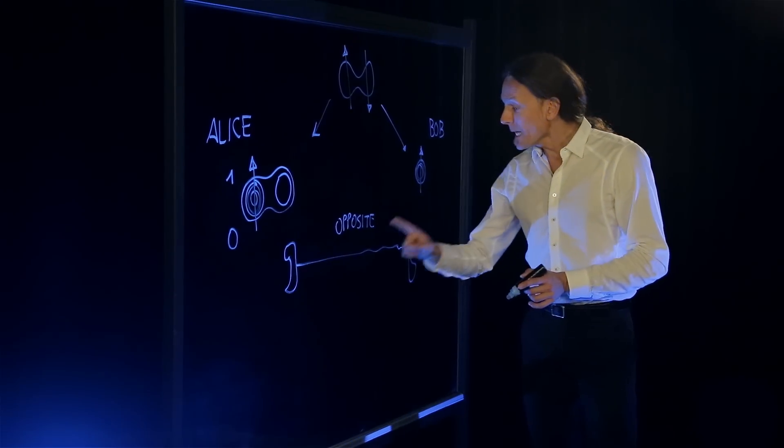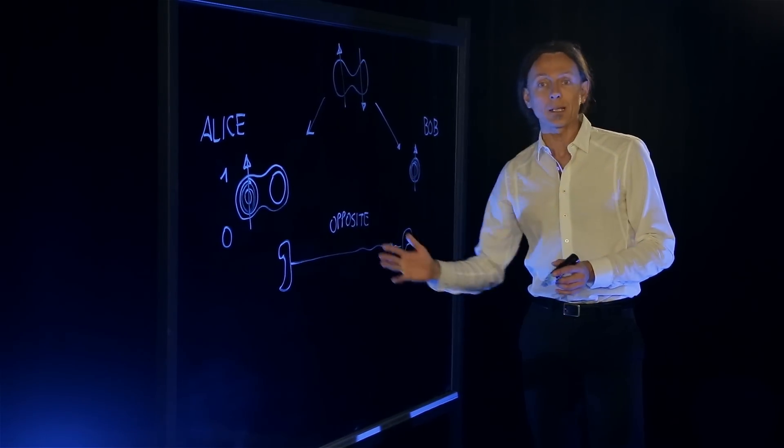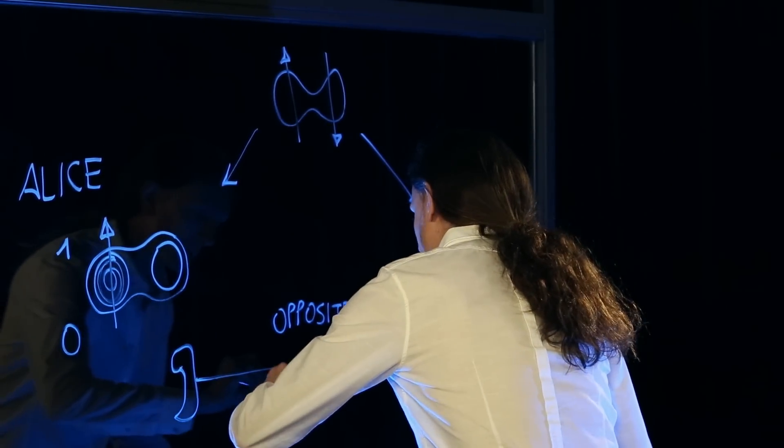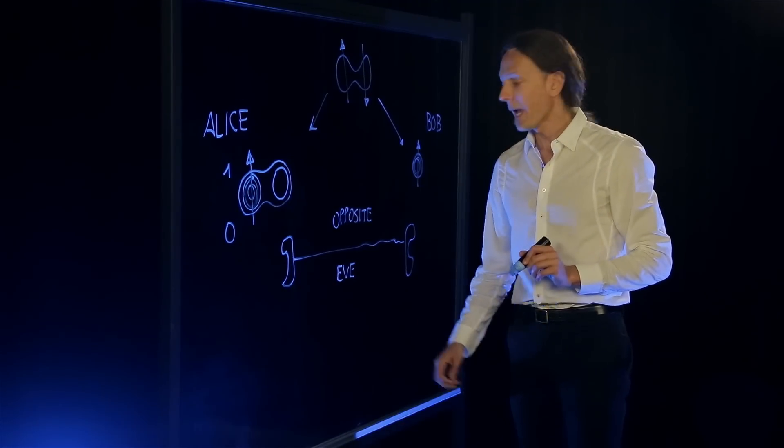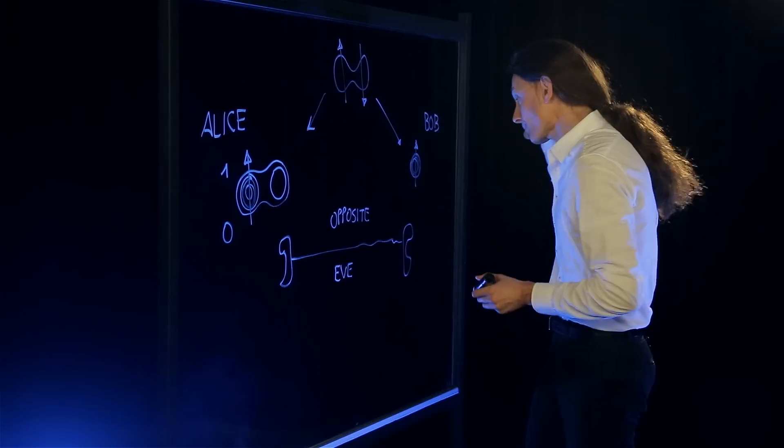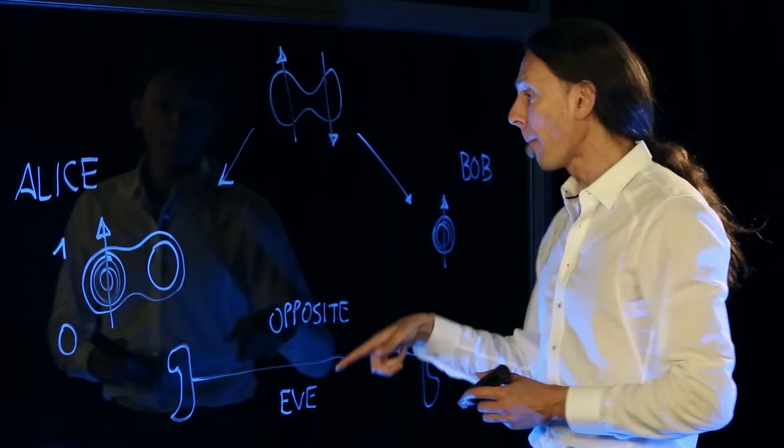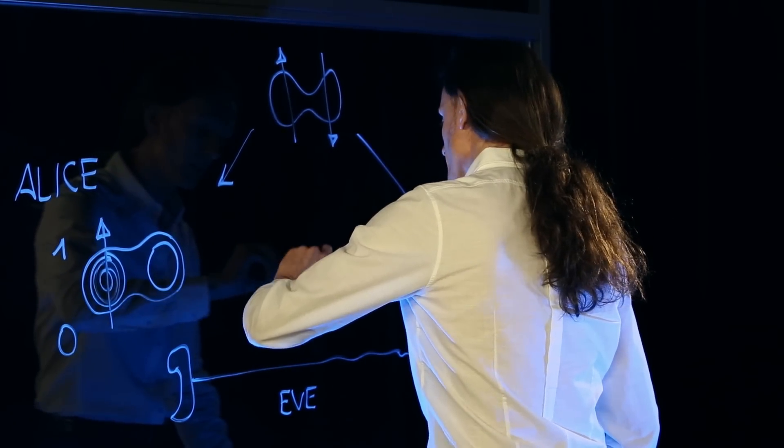Now, is it dangerous to transmit this information along this classical communication channel? I mean, of course, there could be an eavesdropper that we normally call Eve, who taps the telephone line and tries to listen to the phone call between Alice and Bob. Well, all Eve will hear is Alice telling Bob opposite, or if the electrons happen to be the same, she will say the same.